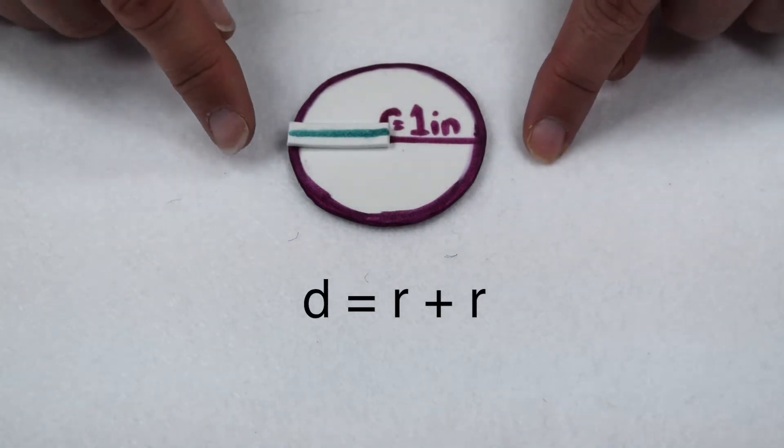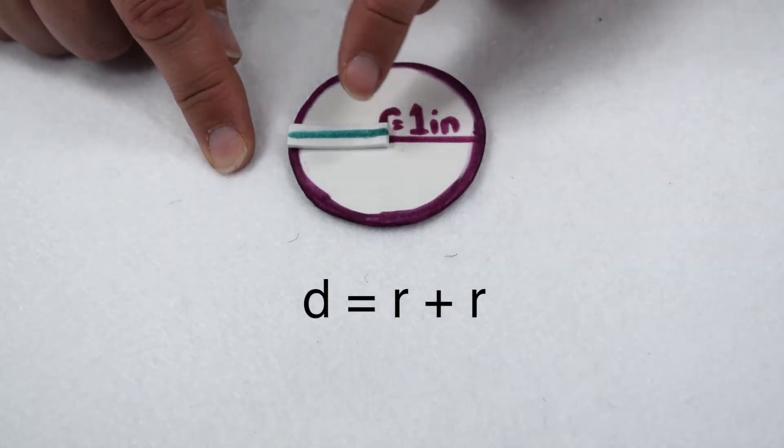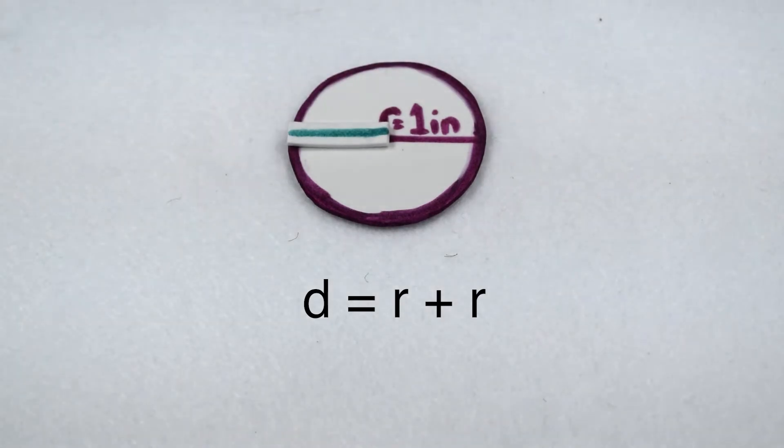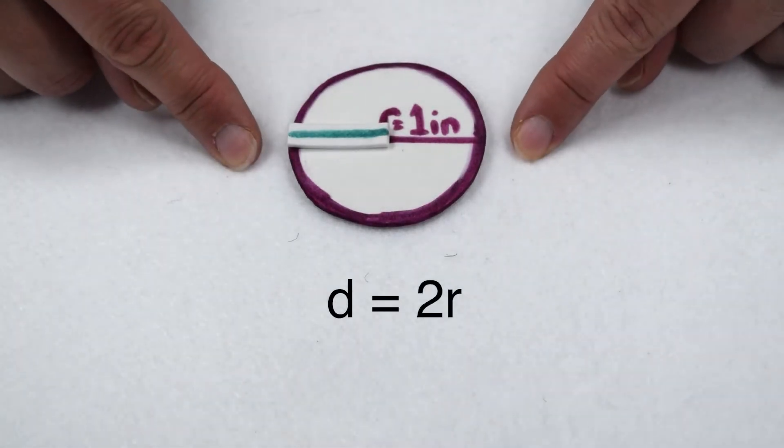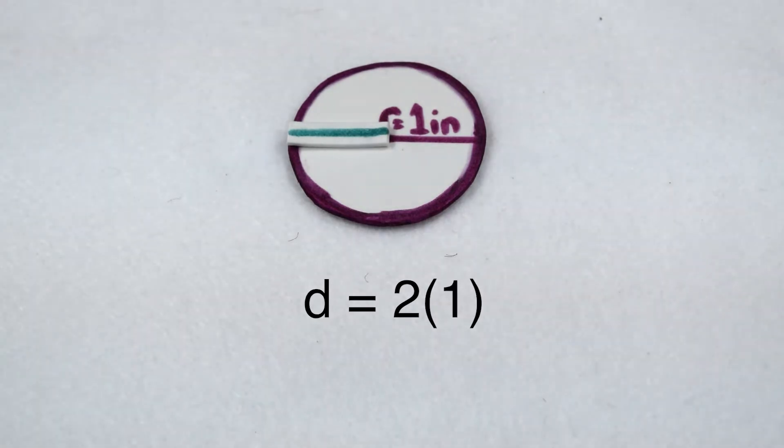But we can also see we've made a diameter because we've gone from one edge through the middle to the opposite edge of the circle. This tells us that our diameter is worth twice the radius. So to find the diameter of this circle, we would multiply two by our radius of one inch to give us a total diameter of two inches.